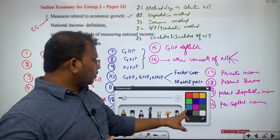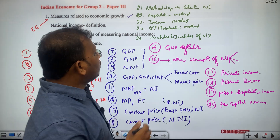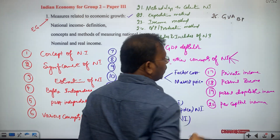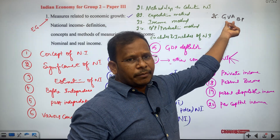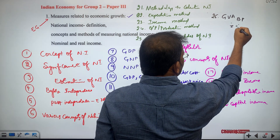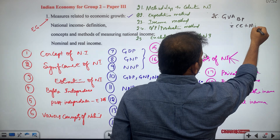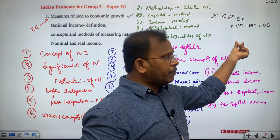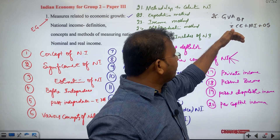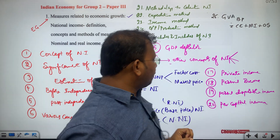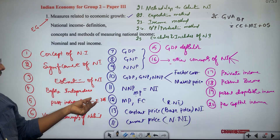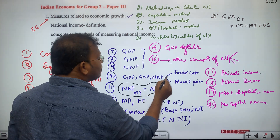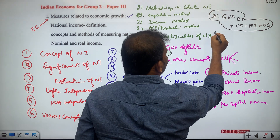As a new methodology from 2014-15, the 26th subtopic covers GVA at basic price — gross value added methodology at basic price. We study compensation of employees, mixed income, and operational surplus. Then we define GVA at basic price and differentiate it from national income calculated as NNP at market price, which is covered as the 27th subtopic.